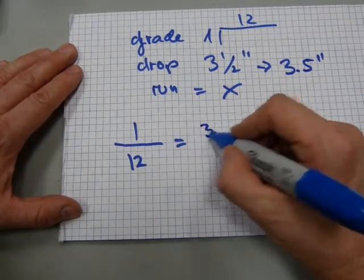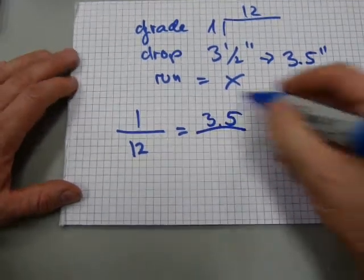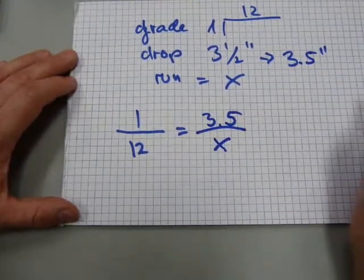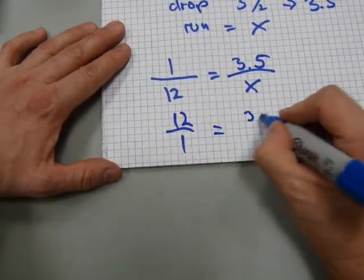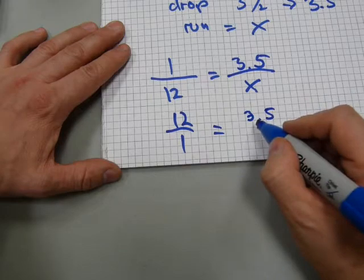Drop goes in here, 3.5 over run is the x amount. Again, to keep the math the same, I'm gonna flip it. 12 over 1 is the same as...